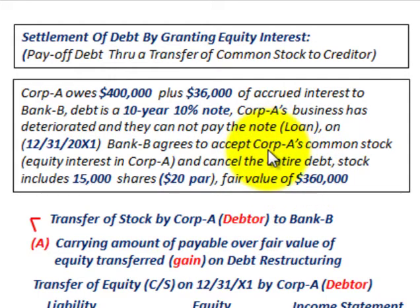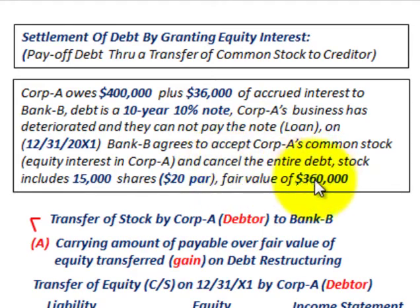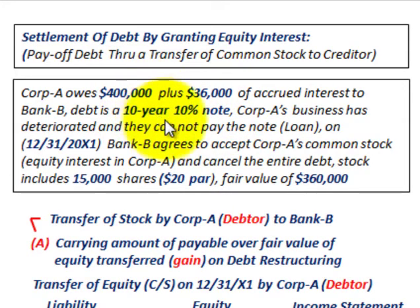Corporation A cannot pay the debt of $400,000 plus the accrued interest owed to Bank B. So Corporation A offers Bank B its own stock, which has a fair market value of $360,000. By issuing this stock to Bank B, Corporation A will not be responsible for paying the $400,000 note or the interest. Bank B will write it off in exchange for the fair value of the common stock received from Corporation A.